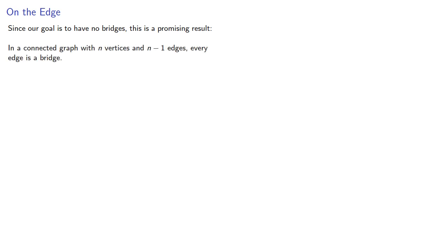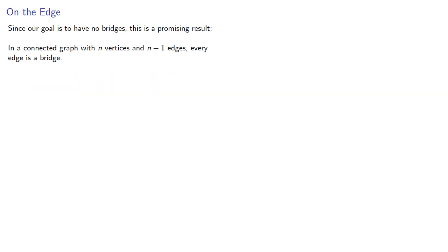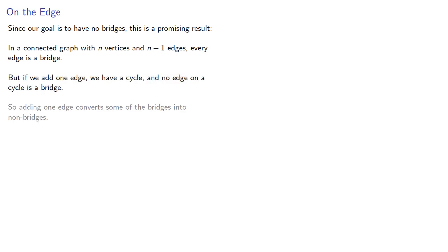Since our goal is to have no bridges, this is actually a promising result. In a connected graph with n vertices and n-1 edges, every edge is a bridge. But if we add one edge, we have a cycle, and no edge on a cycle is a bridge. So adding one edge converts some of the bridges into non-bridges. Let's see where this takes us.